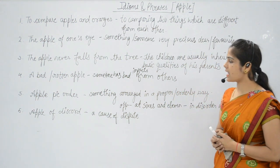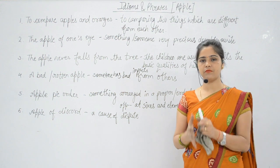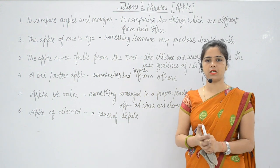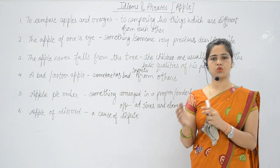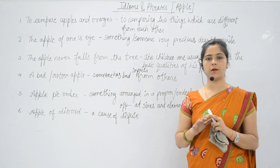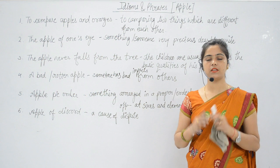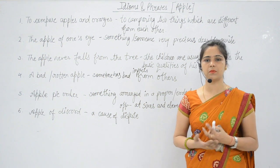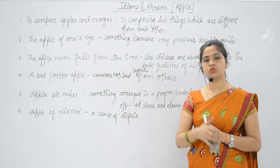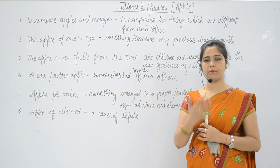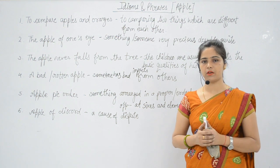Next, 'apple pie order' — that means something put in a proper, orderly, or systematic way. Like when you go into a room and everything is very well arranged — chairs, books in the library all in proper order. So we say the library was in apple pie order.